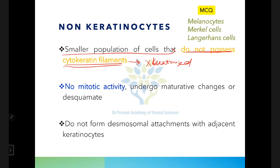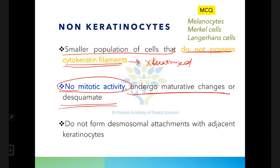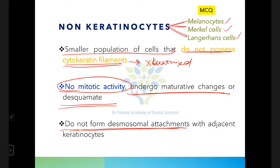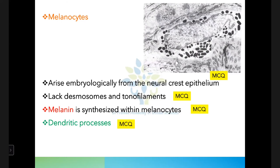Keratinocytes have mitotic activity, mature, and desquamate, while non-keratinocytes show no mitotic activity and no maturative changes. Non-keratinocytes also do not form desmosomal attachments with adjacent keratinocytes. The three types of non-keratinocytes are melanocytes, Merkel cells, and Langerhans cells — also called clear cells.